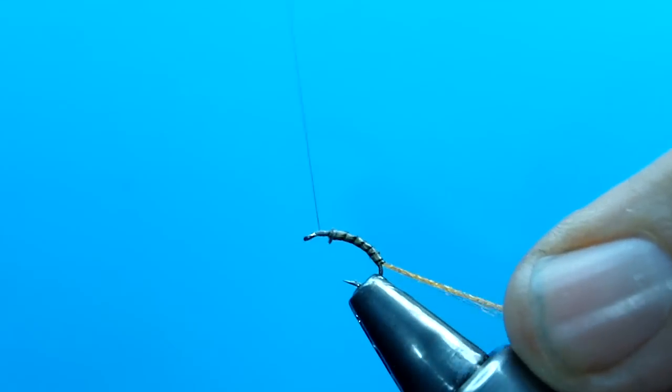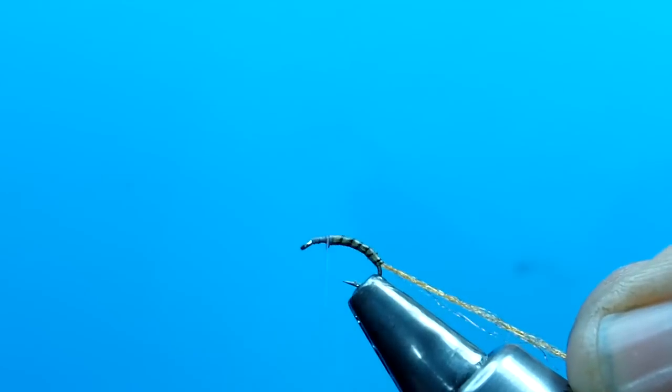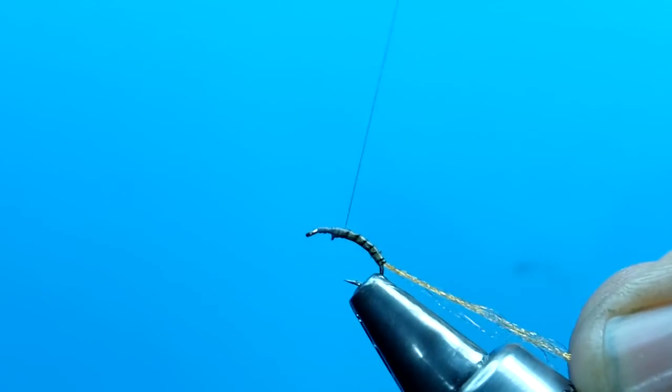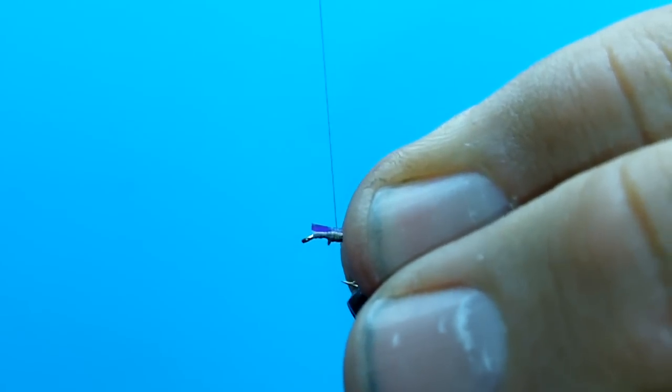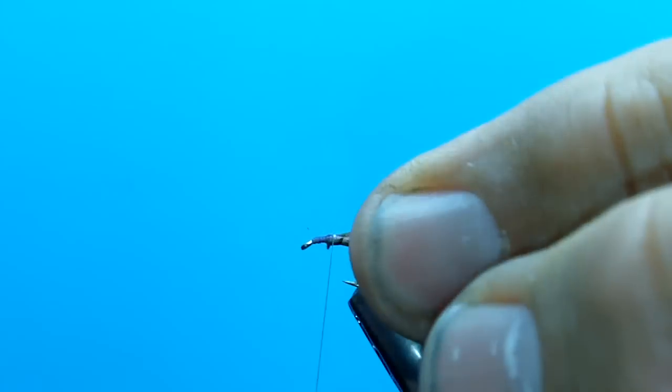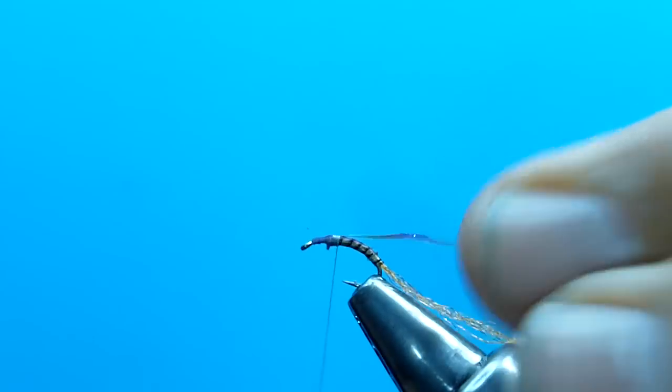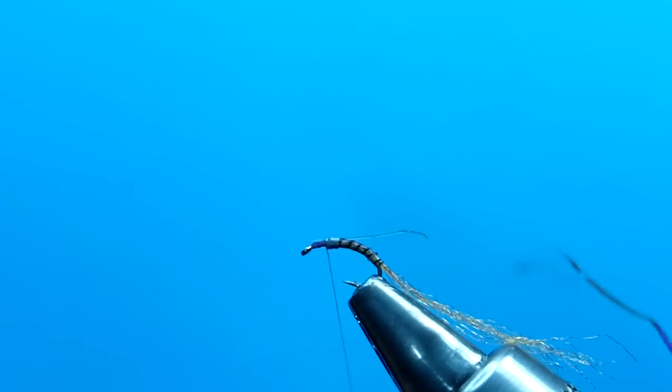I'm going to go ahead and bind it down. Now what we're going to do is start tying in our wing case material. The first one, this one has two wing case materials. The first one is a Mirage opal tensile. We're going to bind it down.